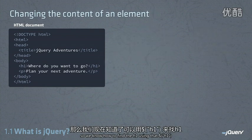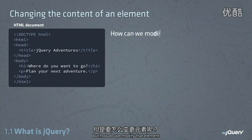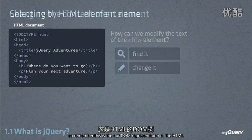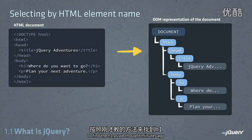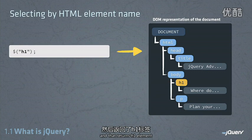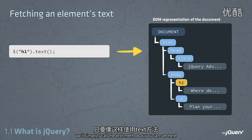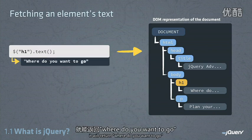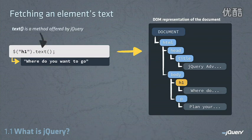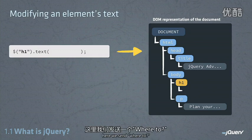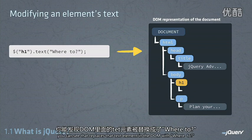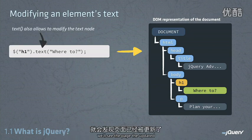So now we know how to find the H1 using $('h1'). But how do we modify that element? To find the H1, we simply write $('h1'), and that returns the H1 element. If we wanted to return the text inside that H1, we would call the text method — it would return 'where do you want to go'. In order to modify the element's text, we can send a string into the text method. Here, when we send 'where to', you can see that it replaces that text element in the DOM, and if we were watching in our browser, we would see the page get updated.